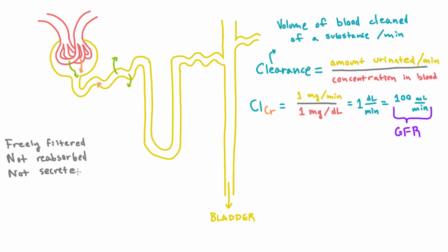And this is where we cheated a little bit with creatinine because it actually is slightly secreted. But when we said we're urinating out a milligram per minute, we were assuming that it's actually not secreted. So for any substance which follows these three rules, its clearance is equal to its GFR.